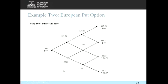Three steps of three months each cover nine months to expiry. Once the tree is drawn, we immediately work out the terminal payoffs, with the strike price being $110. With three up movements the share price is $145 — above the strike, payoff zero. With two up and one down the share price is $113 — still above the strike, payoff zero. With one up and two downs the share price is $88.25, giving a payoff of $21.75. With three consecutive downs the share price is $68.73, giving a payoff of $41.27.